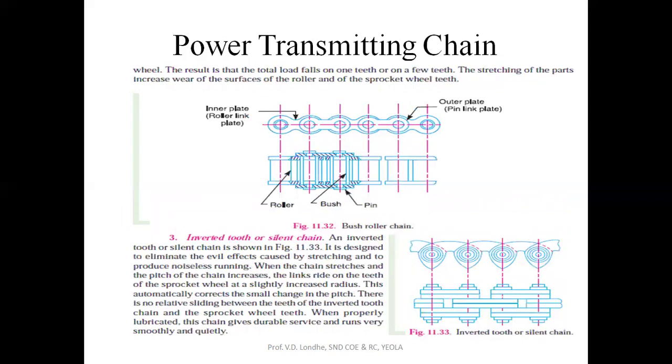Last is the inverted tooth or silent chain. This inverted tooth silent chain is designed to eliminate the effects offered in block chain and bush chain, such as stretching, slack formation, and noise production. When the chain stretches, the pitch increases and links rise.